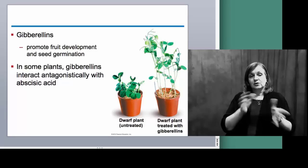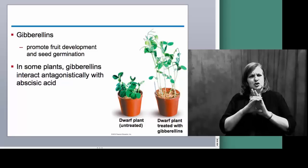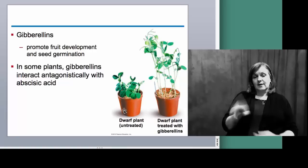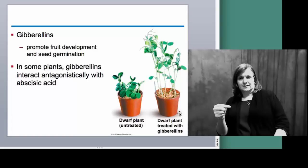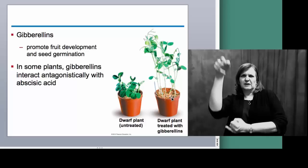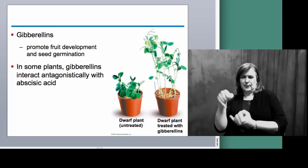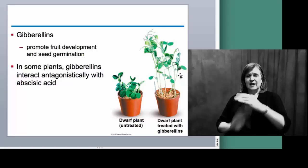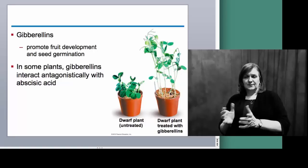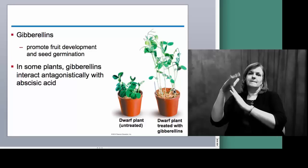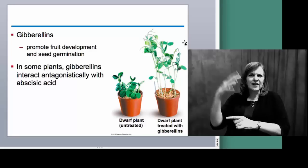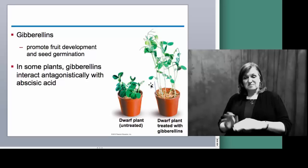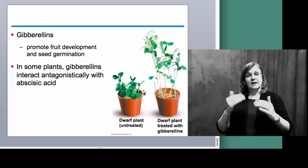Here are pictures of two different types of plants. This dwarf plant has been untreated with gibberellin, but the other one has been treated with gibberellins — and it's very, very tall, almost lanky. You might think this is an unhealthy plant because it's so tall and missing leaves at the bottom, but those leaves are all at the top, right where the sunlight is. So not having leaves at the bottom is not important for this plant.